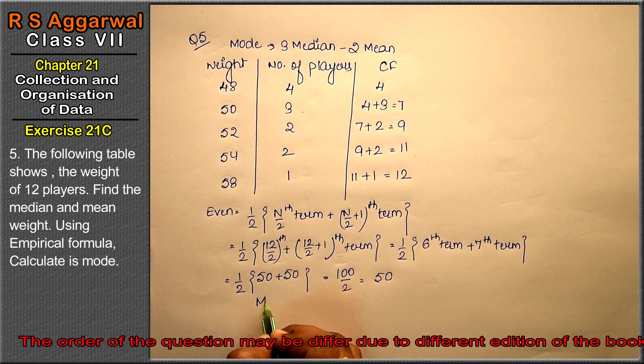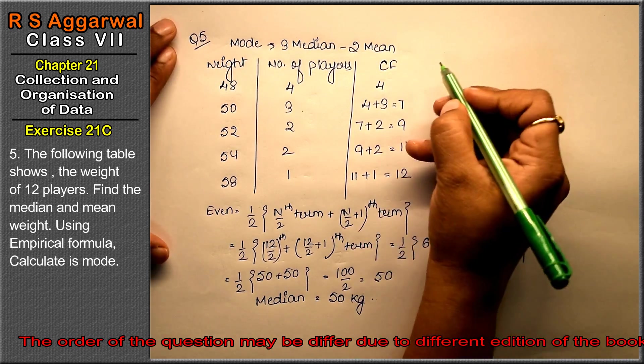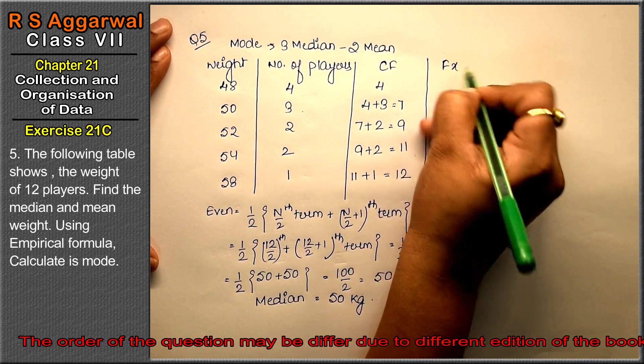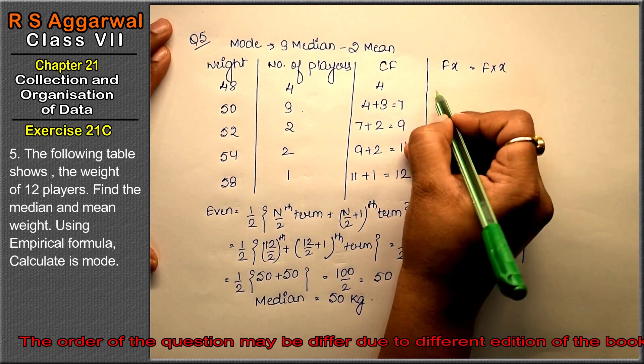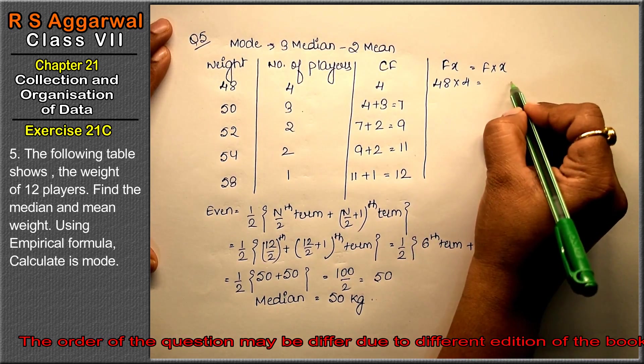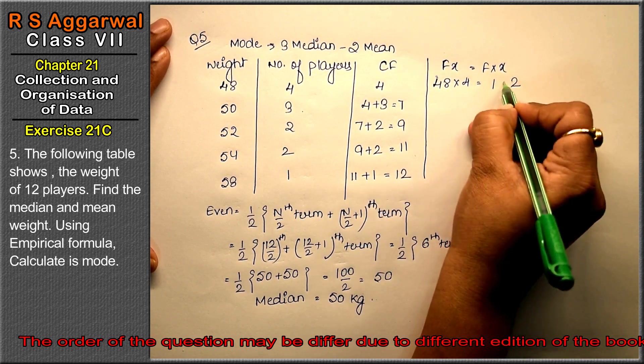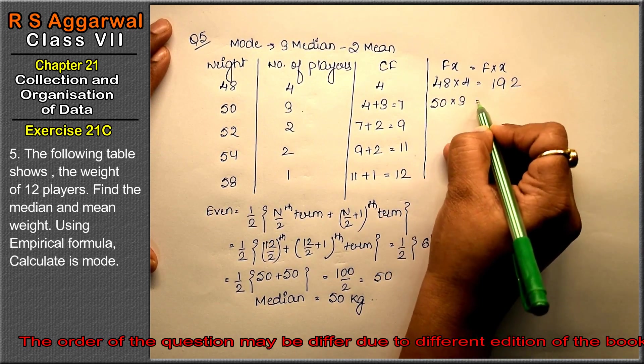Median equals 50 kg. Now let's find the mean. For mean we need Fx, which is F into x. That means 48 into 4: 4 eights are 32, 3 carry, 4 fours are 16, 17, 18, 19 equals 192. 50 into 3: 3 fives are 15, zero as is, equals 150.